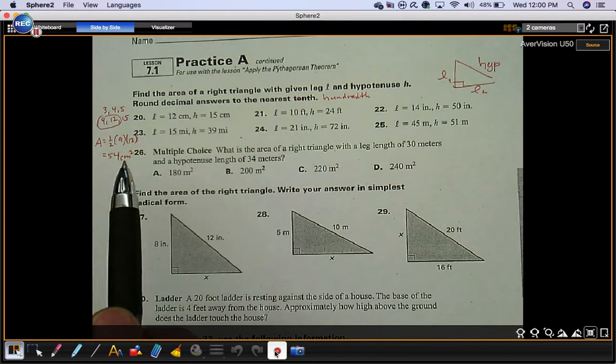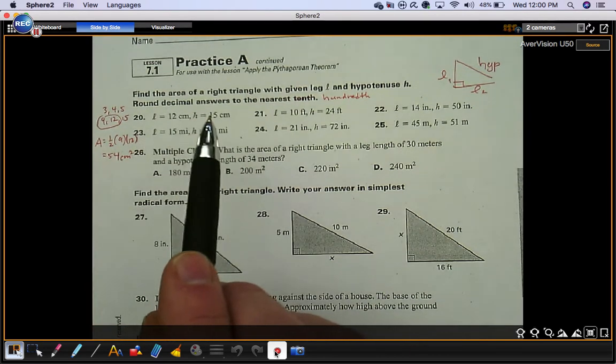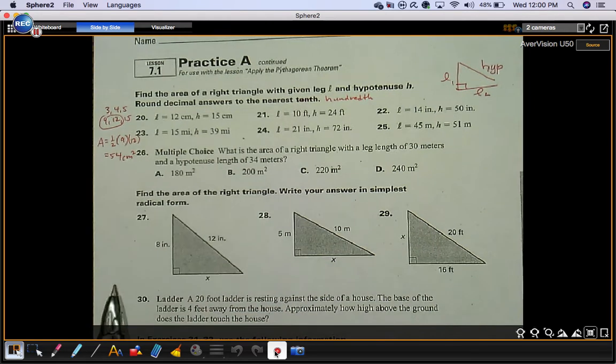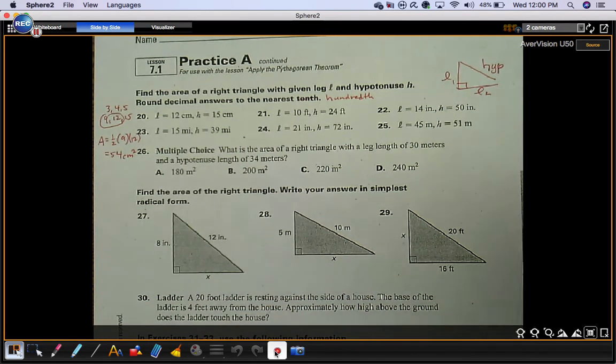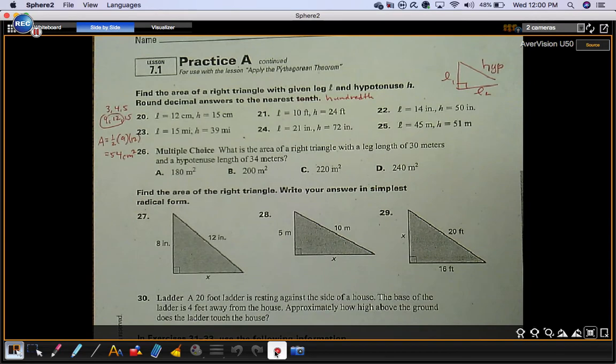That's how all of these are going to go. You're going to find the other leg and then use it to find the area of the triangle. A lot of these end up being triples.